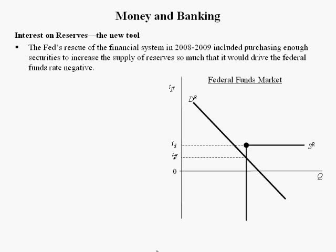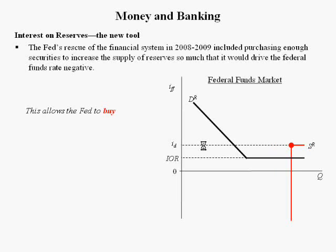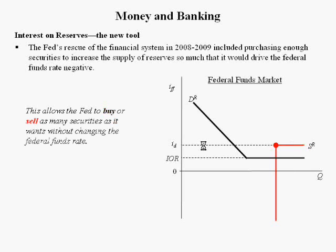During the rescue of the financial system, the Fed bought so many securities that the Federal Funds rate could actually go negative. To prevent this, in October of 2008, the Fed began paying interest on reserves, which is currently about 0.25%. Interest on reserves acts as a price floor — the interest rate cannot fall below this level. The discount rate would be at about 1.25% because it's 100 basis points higher than the Federal Funds rate. This allows the Fed to buy or sell as many securities as it wants without changing the Federal Funds rate.